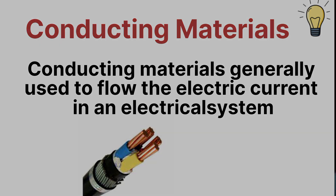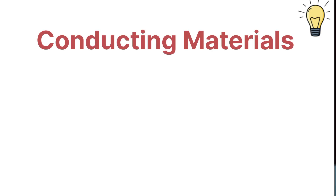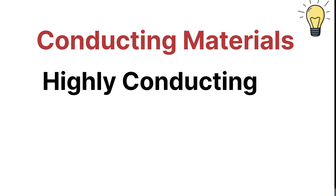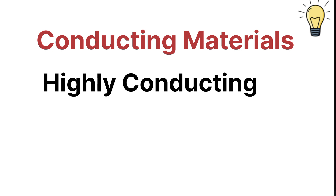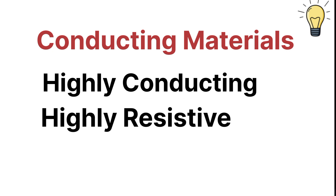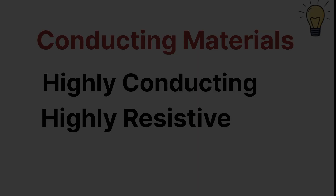Now let's talk about what are the types of conducting materials. There are generally two types of conducting materials: the first one is highly conducting material and the second one is highly resistive material. Let's see what are the highly conducting and highly resistive materials one by one.